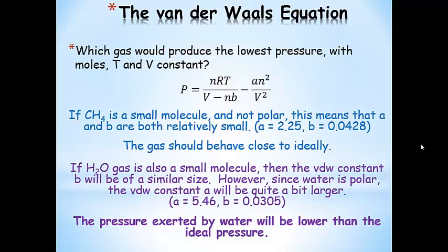Since methane is a small molecule and not polar, A and B are both pretty small. Looking up the values confirms that A is relatively small — a pretty small amount of intermolecular attraction correction — and B is also small because methane is a relatively small molecule.